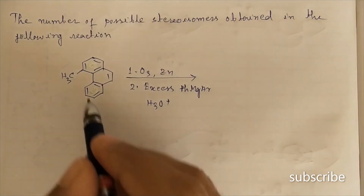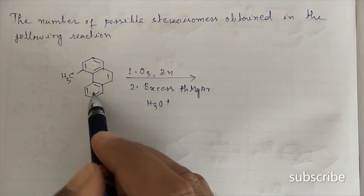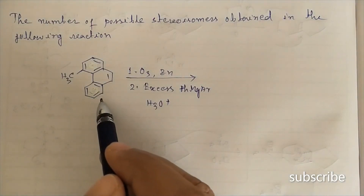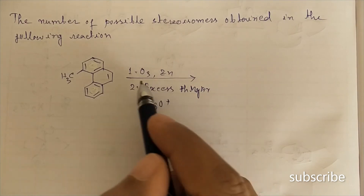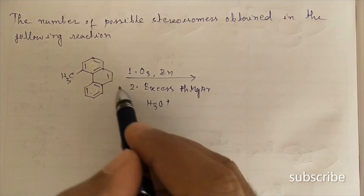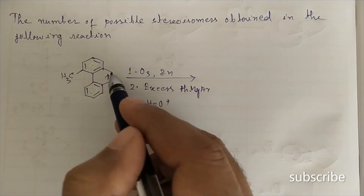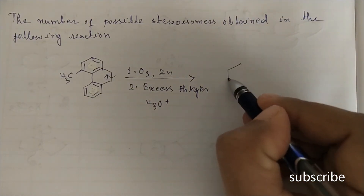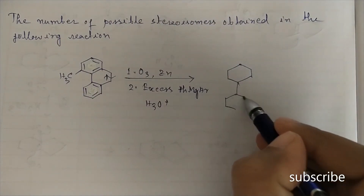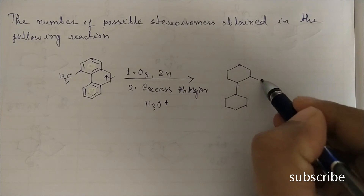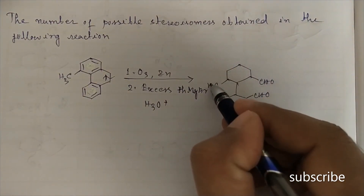The next question asks for the number of possible stereoisomers obtained in the following reaction. This is a phenanthrene derivative which is first ozonolyzed and then treated with excess PhMgBr. On ozonolysis, one bond cleaves and is converted to a CHO group. The product will have two CHO groups and one CH3 group.